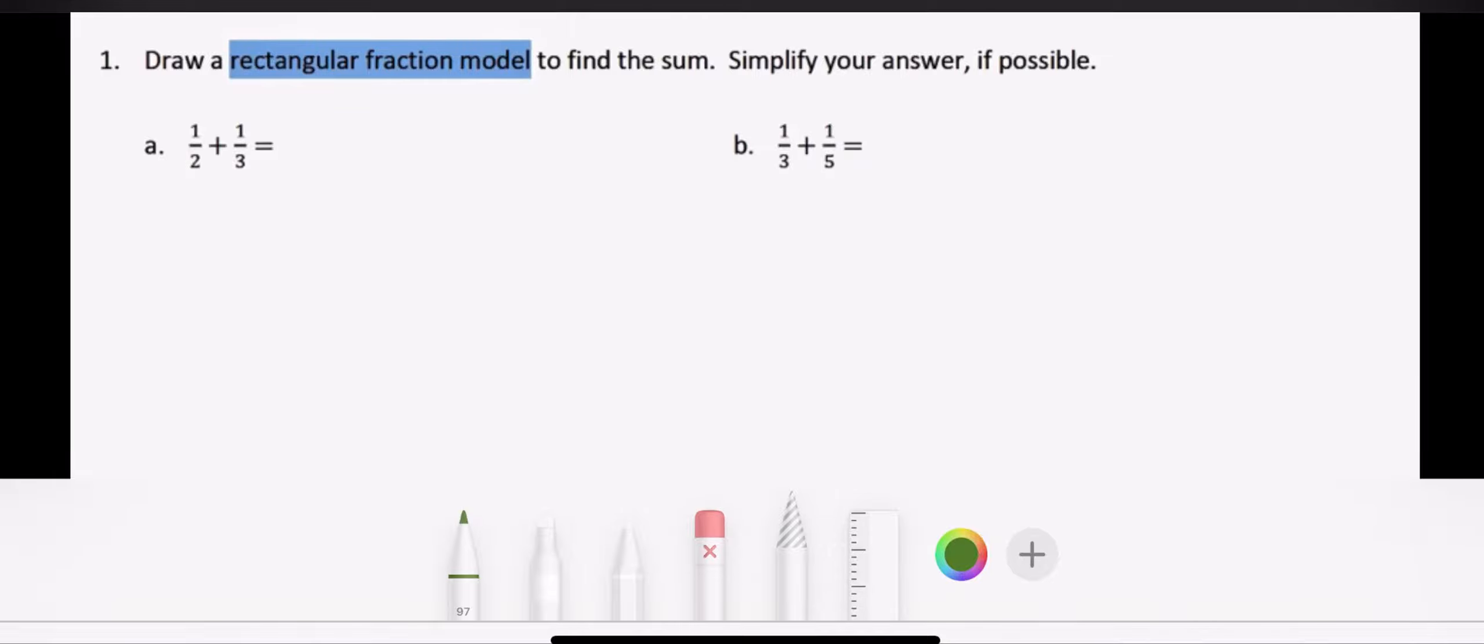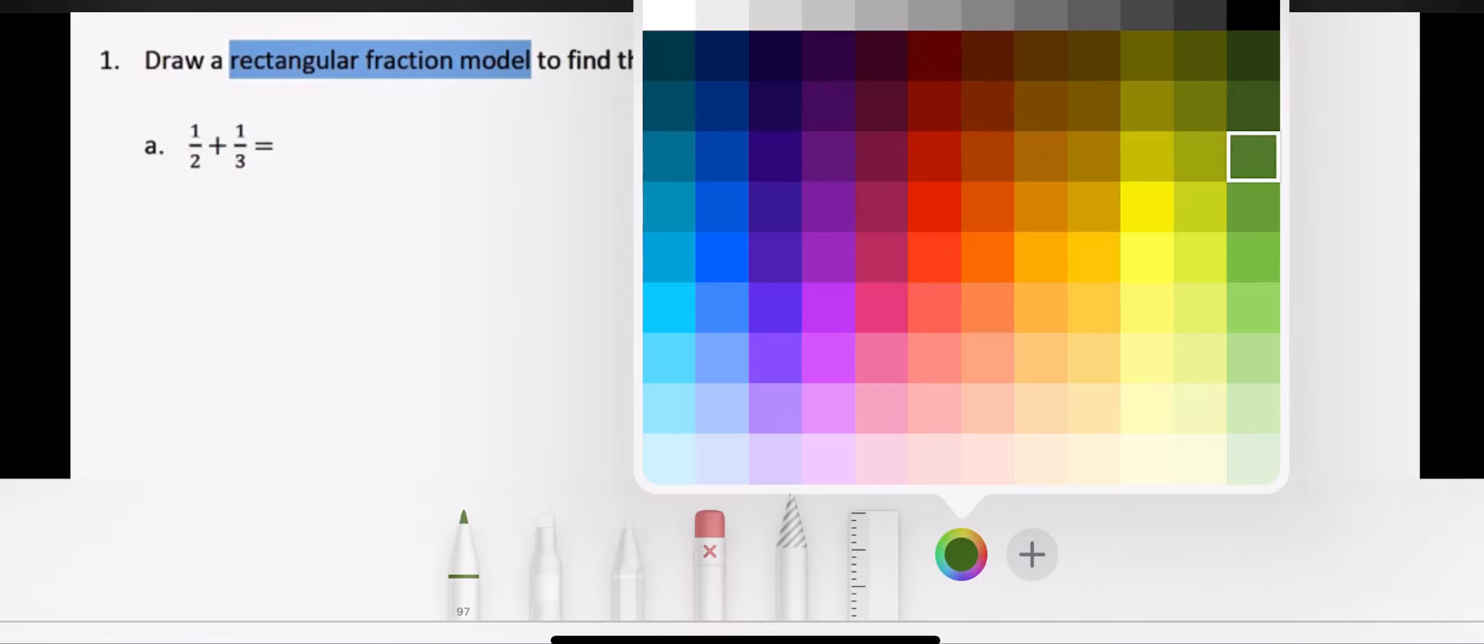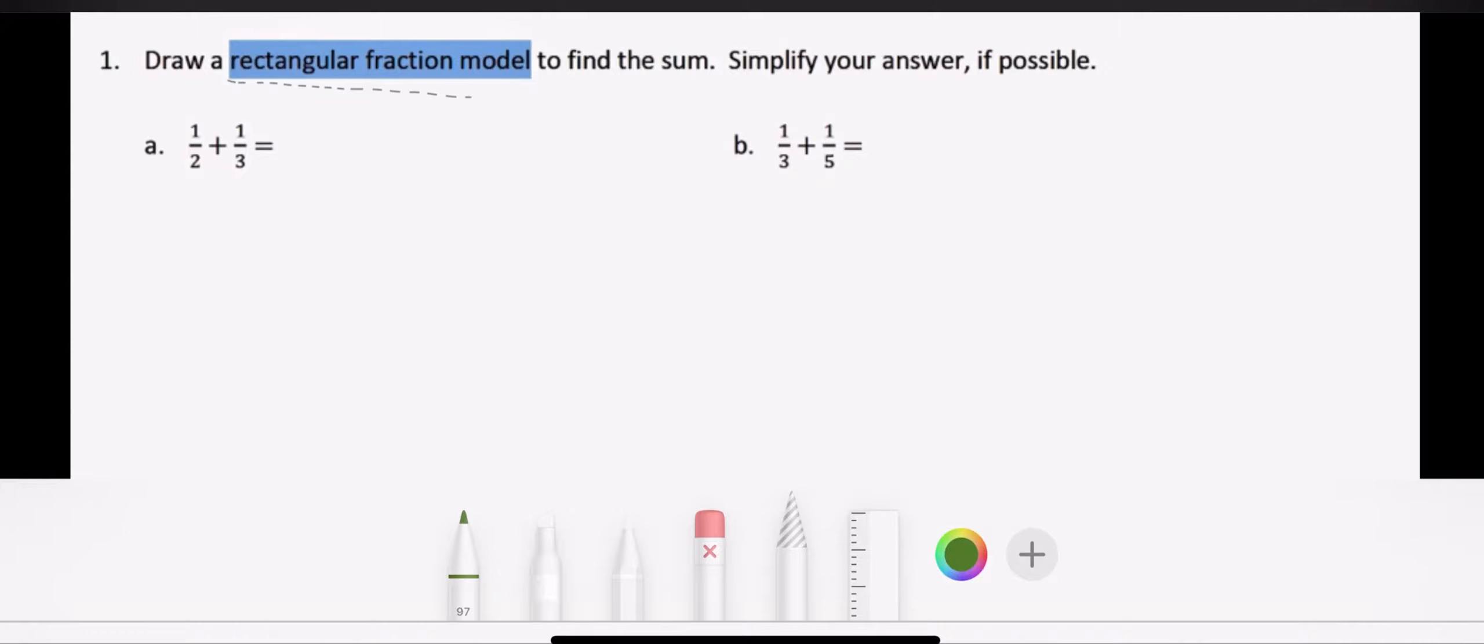Today we are going to be drawing a rectangular fraction model to find the sum. And I see that I also have to simplify my answer if possible. So what we're going to be doing today is adding fractions, and then if my number can be divided by the same number on both my numerator and my denominator, I will be able to simplify.